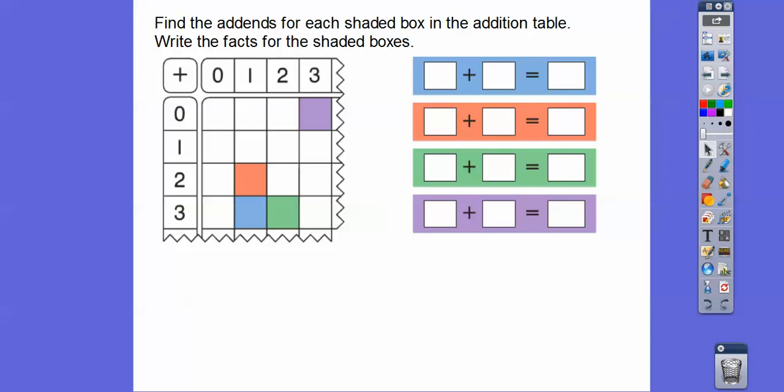So this one says, look at the blue box. The blue box is 3 + 1. So we're going to put that right here. 3 + 1. 3 + 1 = 4.